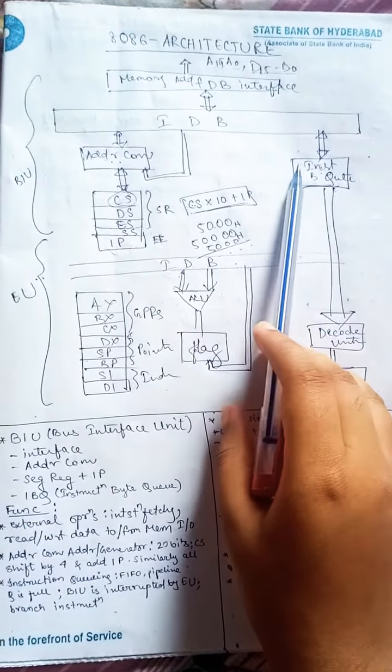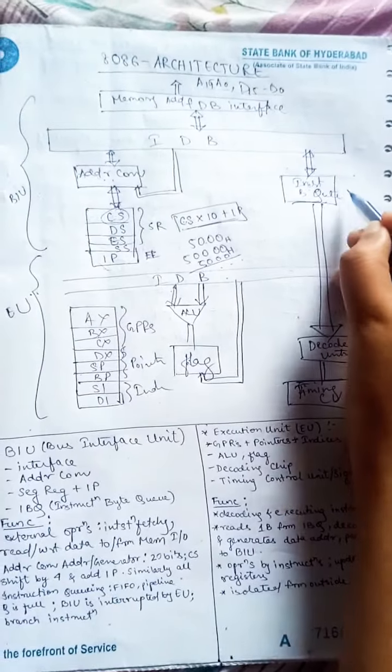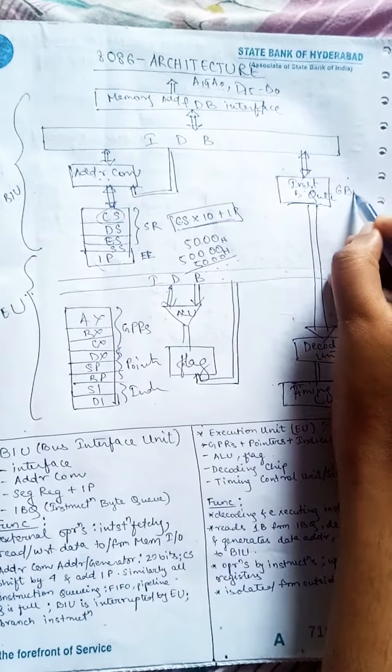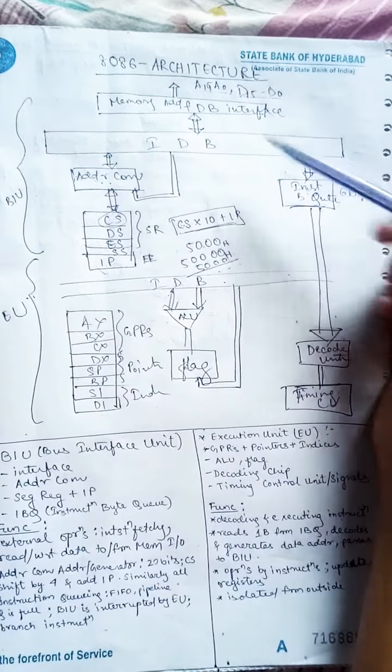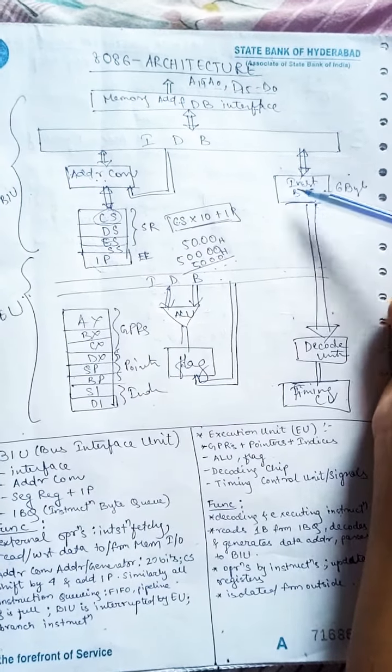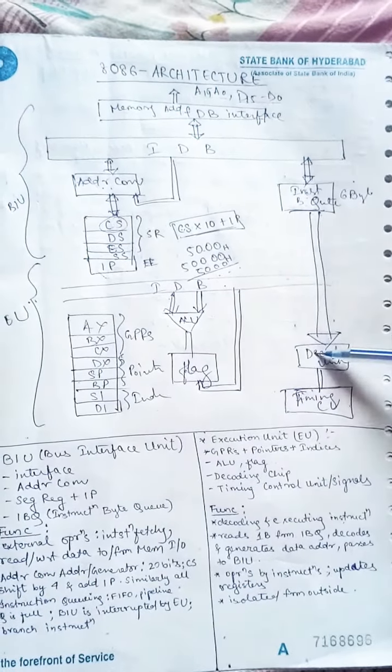Then we have the instruction byte queue. What this does now—this size is six bytes. It will fetch six instructions or instructions of size six bytes and it will keep here. From here the decoding unit will take one byte and it will start decoding.